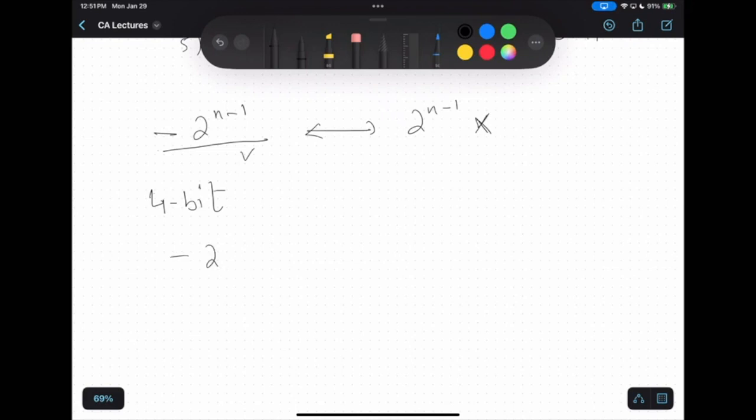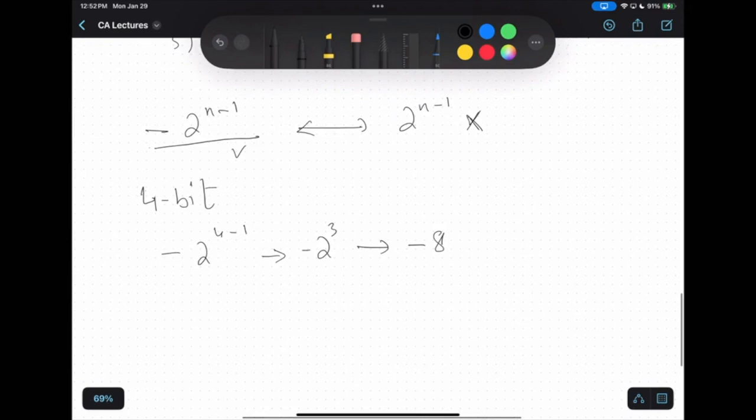So minus 2 to the power 4 minus 1 is equivalent to 2 to the power 3, which is minus 8. And if we talk about this, 2 to the power 3, which is 8, we cannot represent 8 in 4-bits. Why? Because 1, 0, 0, 0, this represents minus 8.